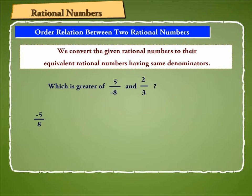Now, minus 5 by 8 is equal to minus 5 into 3 by 8 into 3 is equal to minus 15 by 24 and 2 by 3 is equal to 2 into 8 by 3 into 8 is equal to 16 by 24.